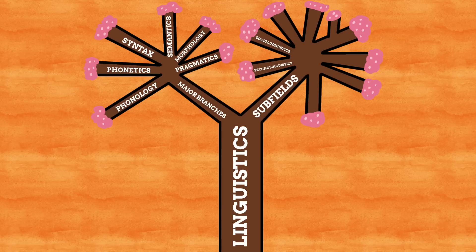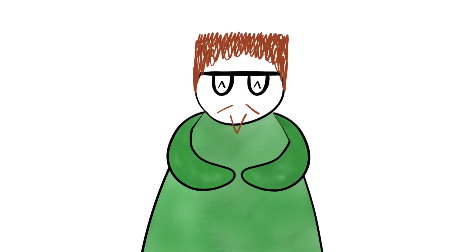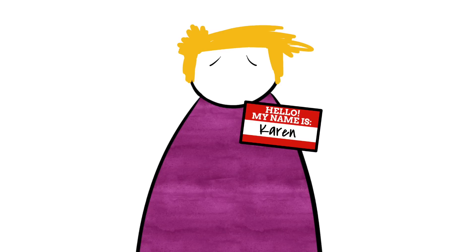A somewhat similar subfield is sociolinguistics — this is where we study how language is used across a society. This is actually the presenter's personal favourite area of study. For example, sociolinguistics can look into how certain words fall in and out of favour with society, like certain words now deemed rude and offensive that were once more commonplace. In regards to names, a great example is with the name Karen and how its meaning has shifted dramatically in society in recent years.